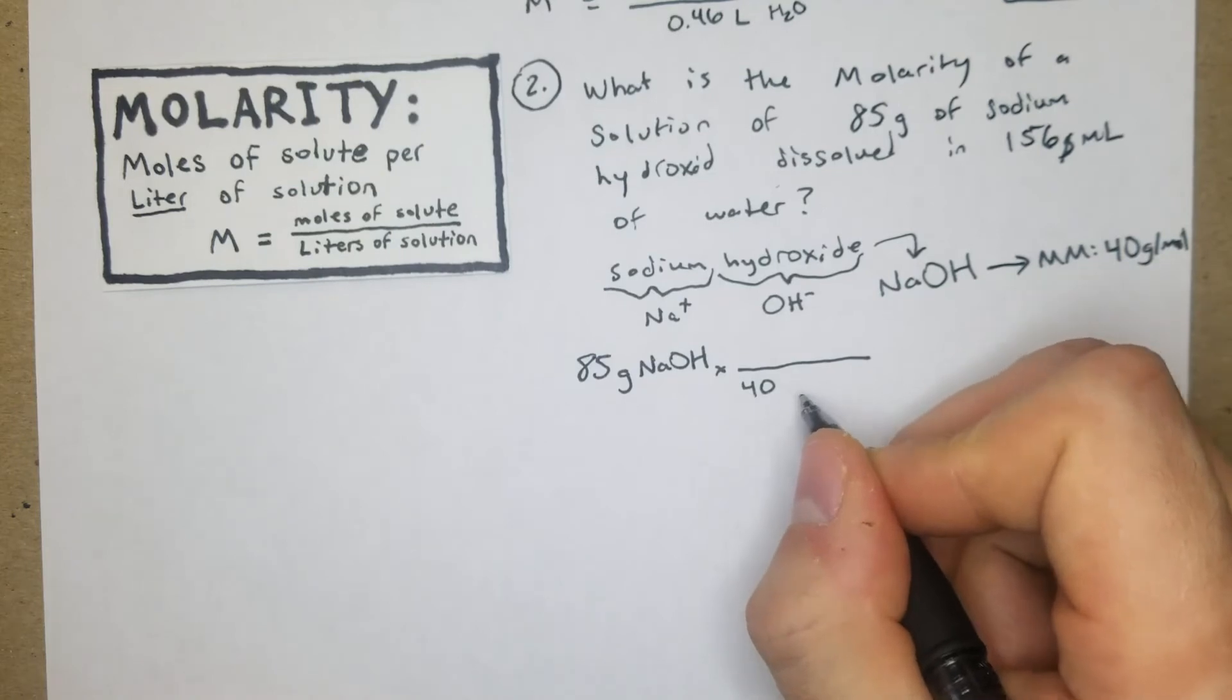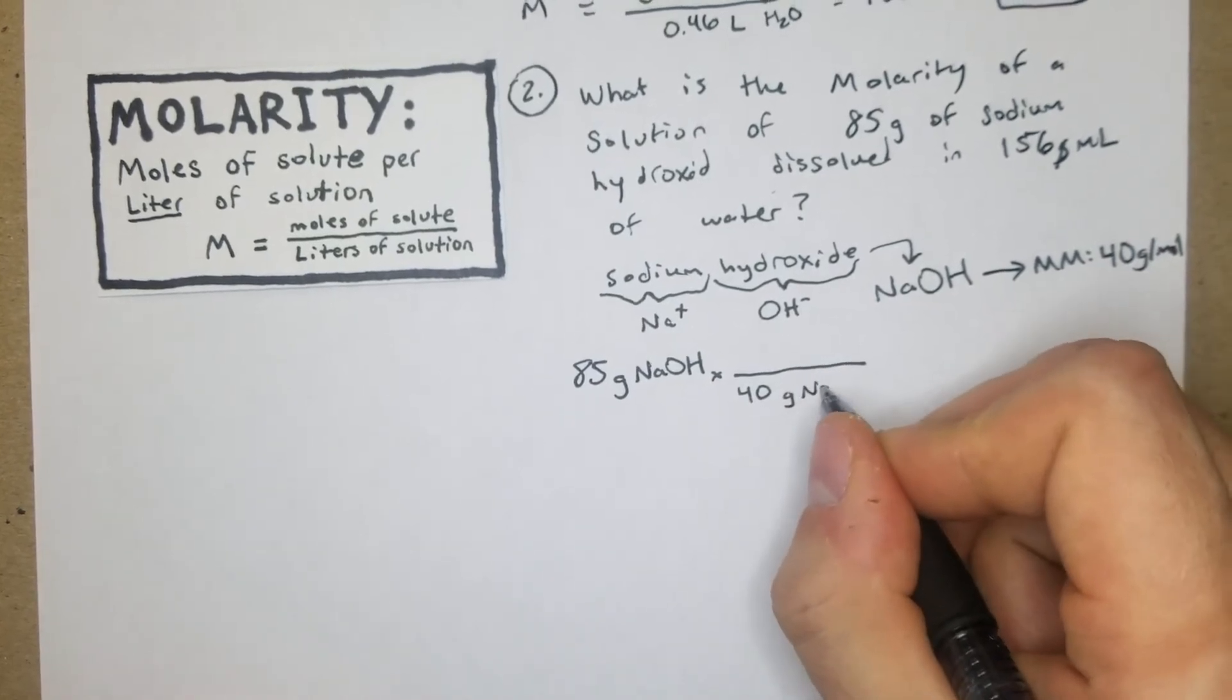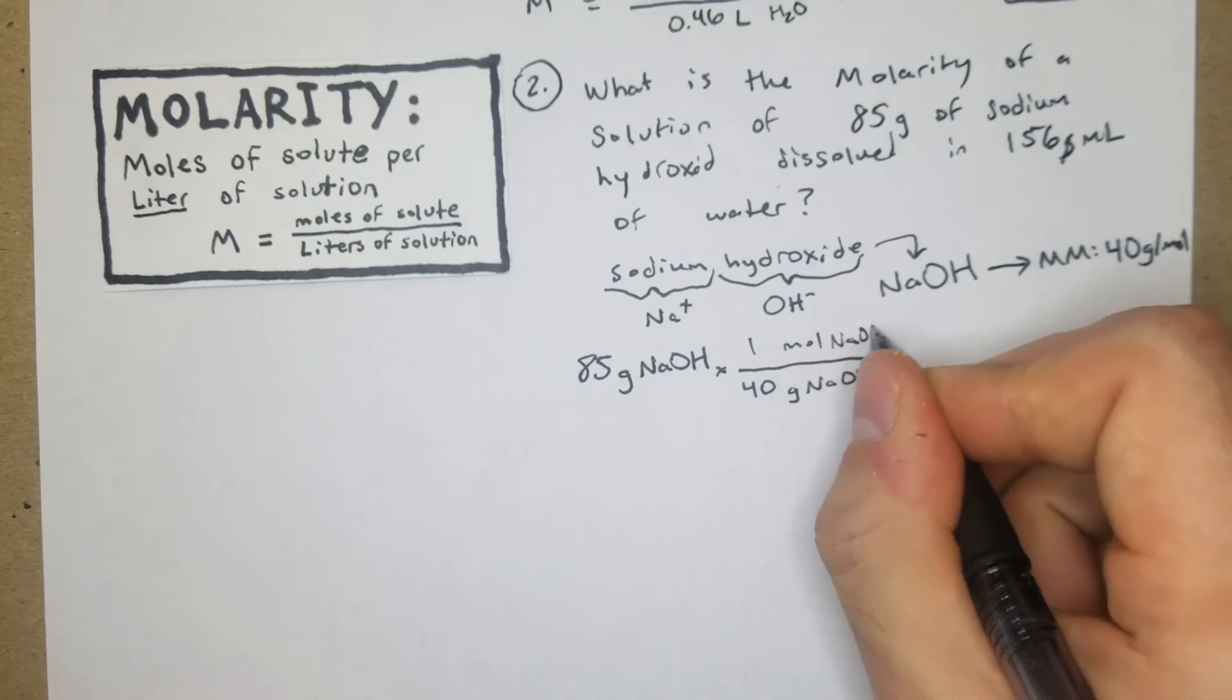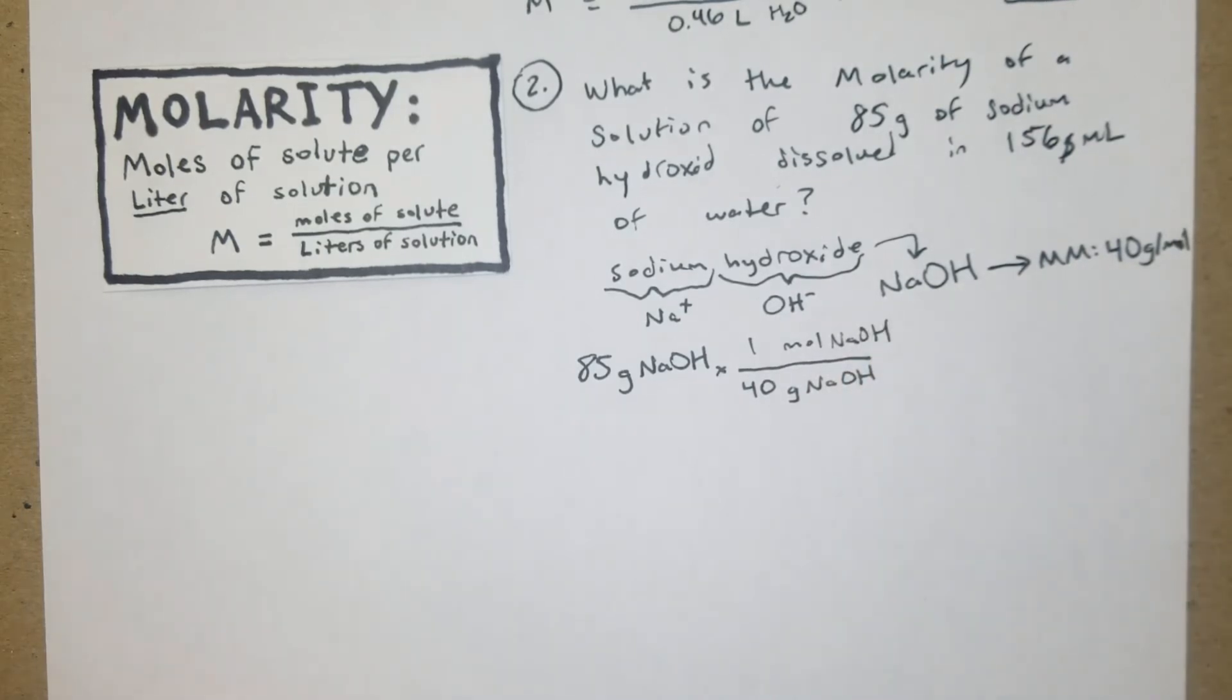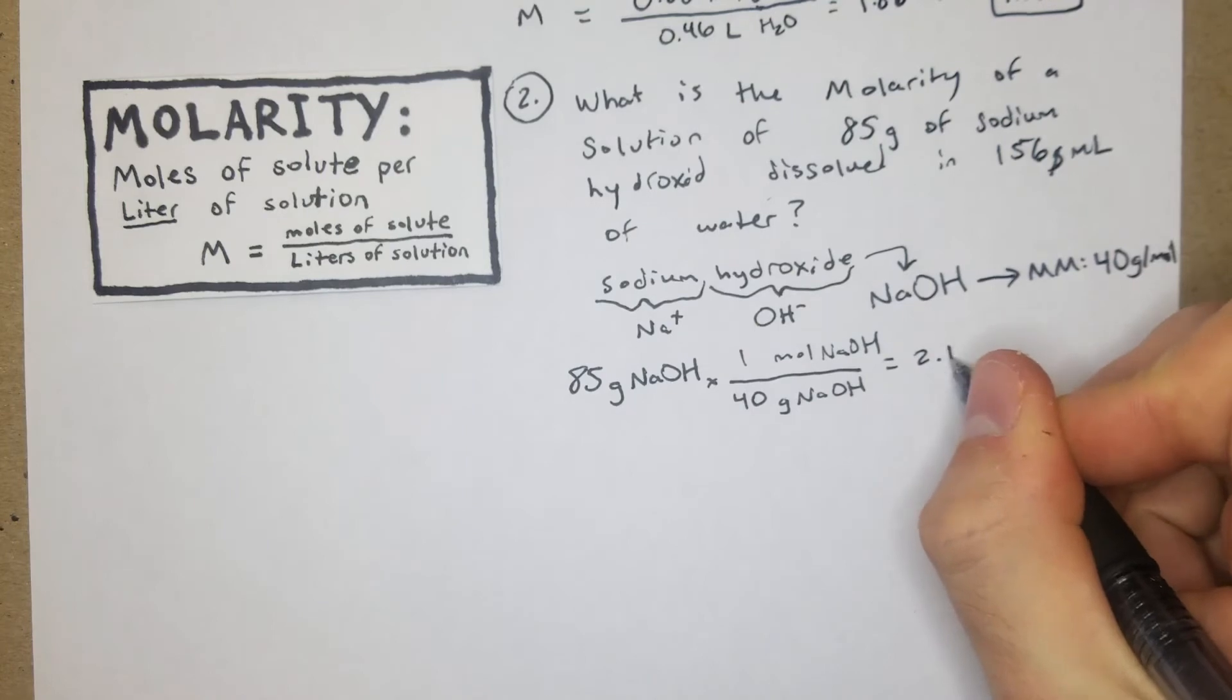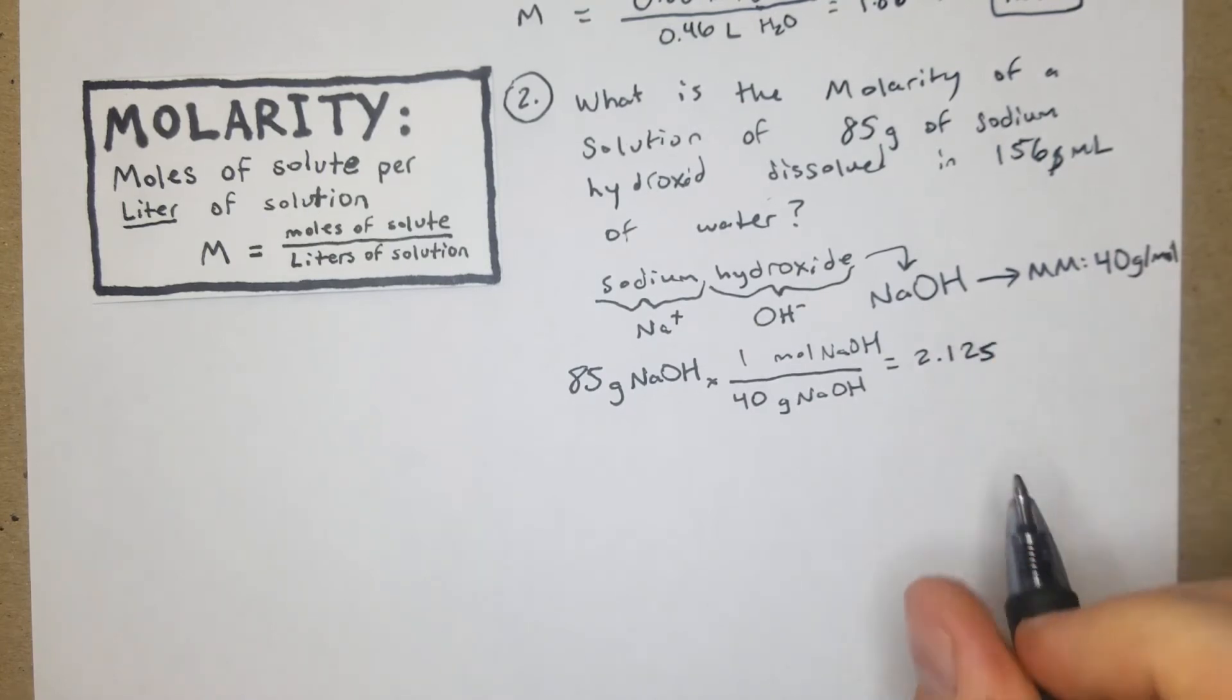We're just dividing 85 by 40 and we're going to get 2.125. We can round that if you want to 2.13 moles of NaOH.